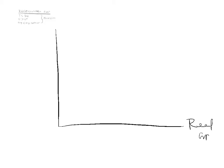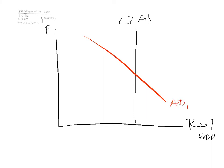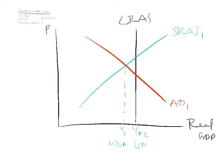On our graph, the axes are Real GDP and Price Level. We have Aggregate Demand and Aggregate Supply. Normally, we would be at the natural rate of unemployment, but currently we are at Y1, where unemployment is higher than normal. The distance between these two points is your Recessionary Gap, and the corresponding price level is P1.